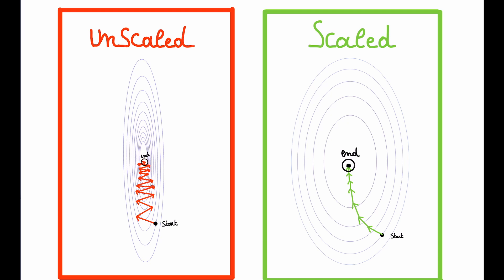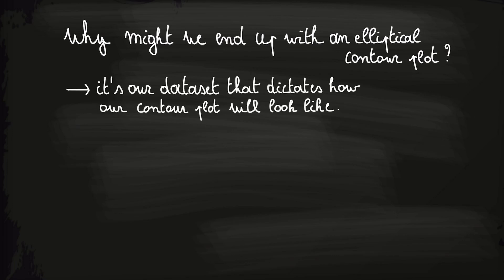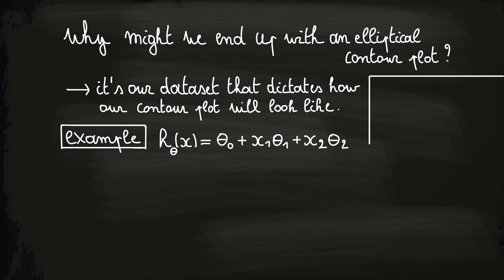Our first task is to understand why we might end up with such an elliptical contour plot. To fast forward, it's our dataset that describes how our contour plot will look like. To illustrate this, let's look at an example. Let's assume we want to predict the price of a car based on the mileage of a car and the age of a car. Then we get a hypothesis like this one, with x1 equal to the mileage and x2 equal to the age.